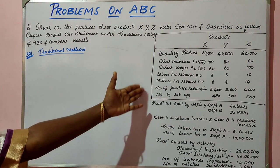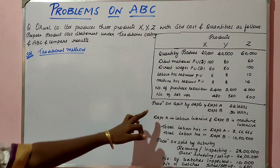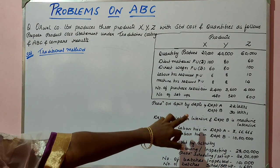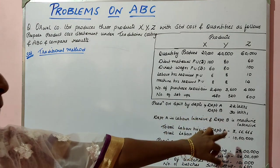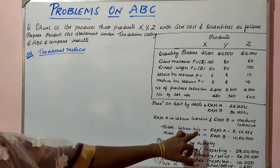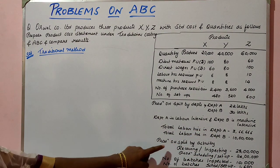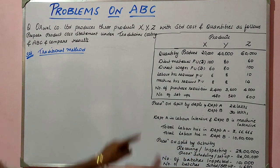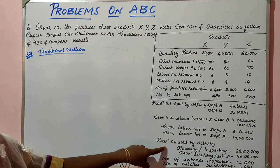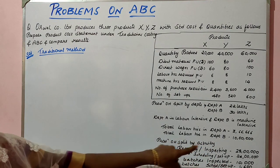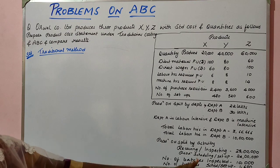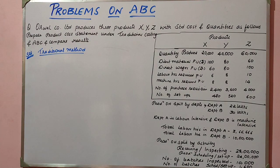The quantities as well as the different costs incurred by three products are given, and production overhead is split on the basis of departments. The amount is given, and it is clearly mentioned that Department A is labor intensive and Department B is machine intensive. The total labor hours for both departments are given. In the case of activity based costing, production overhead is split up by activities, and the number of batches inspected and scheduled are also given.